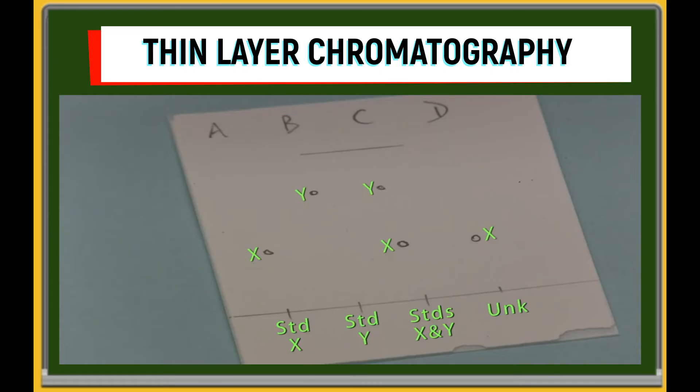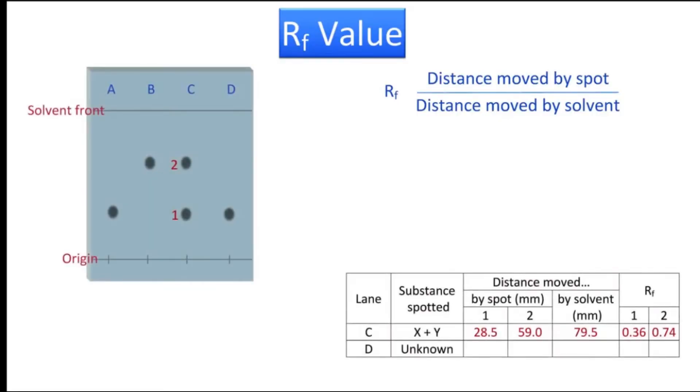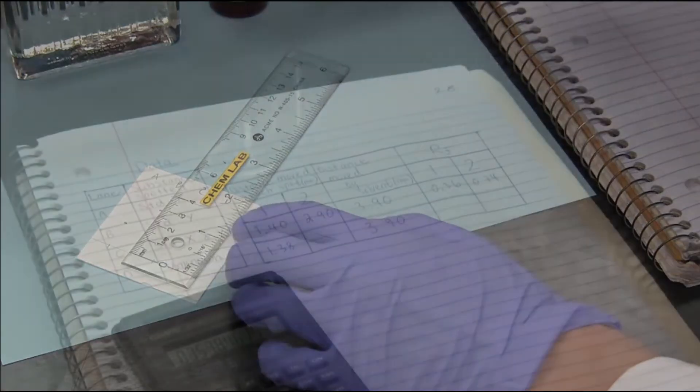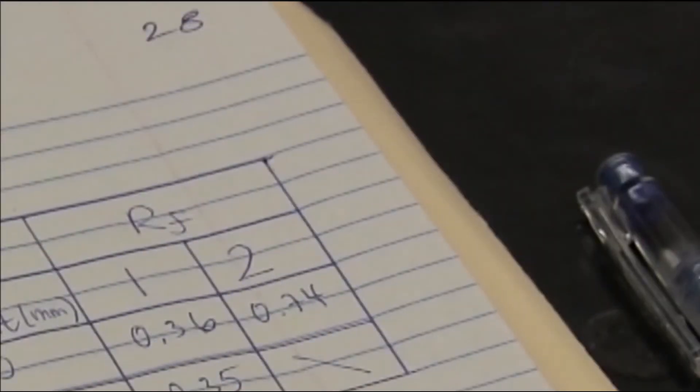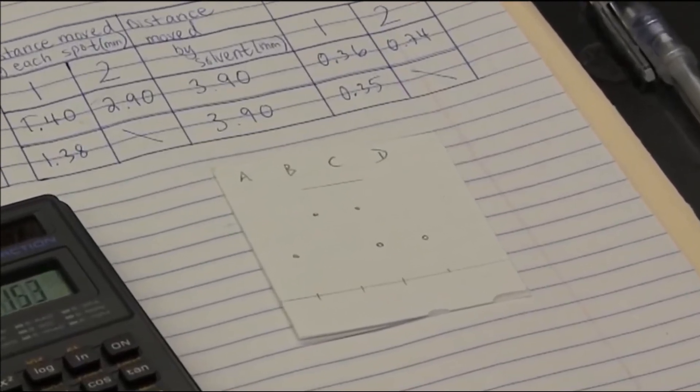The retention factor of a particular material is the ratio of the distance the spot moved above the origin to the distance the solvent front moved above the origin. The amount that each component of the mixture travels can be quantified using retention factors. This allows unknown substances to be compared to known materials. If the retention factor of an unknown substance does not match that of a known material, they are not the same compound.